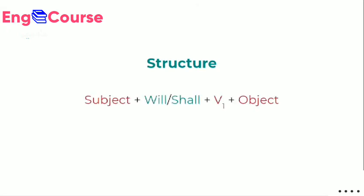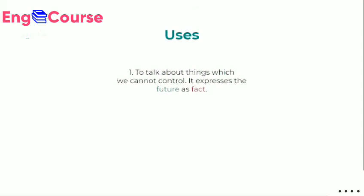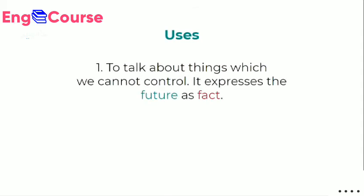Now comes future indefinite tense. First, its structure: the subject is at the start, the object is at the end, and the first form of the verb (V1) is used. To show the future, we always use 'will' or 'shall'. To remind you: 'shall' is used with first-person subjects (I, we), and 'will' is used with all others.